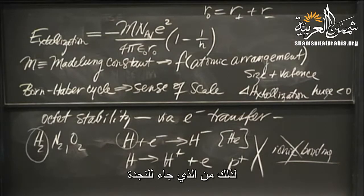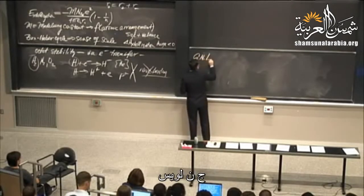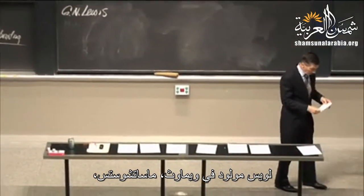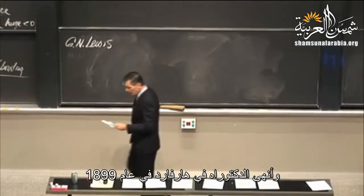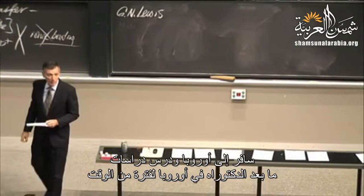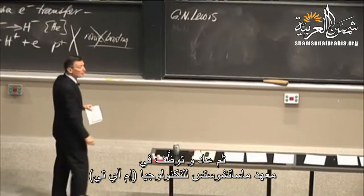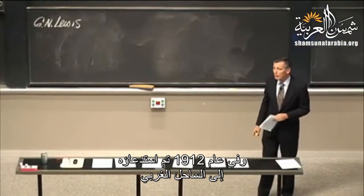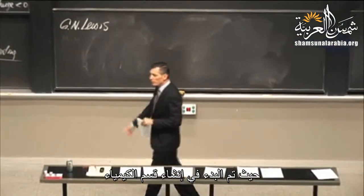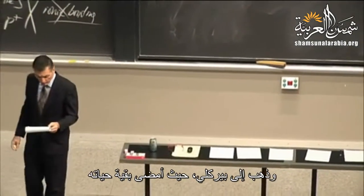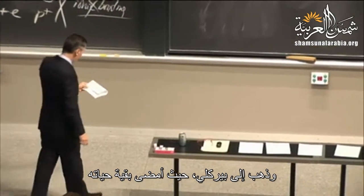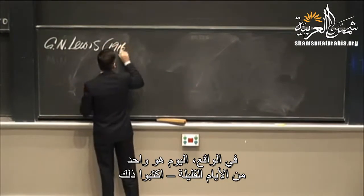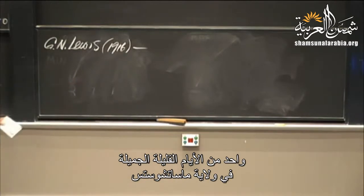G.N. Lewis came to the rescue. Lewis was born in Weymouth, Massachusetts, finished his PhD at Harvard in 1899, went to Europe for postdoctoral work, then came back and got a job at MIT, where he taught from 1905 to 1912. In 1912, he was lured to the West Coast, where they were establishing the chemistry department at the University of California, Berkeley. He spent the rest of his career there — maybe he was fed up with the weather here.